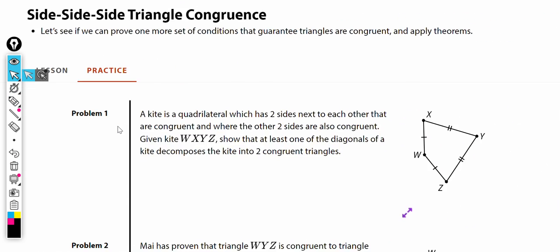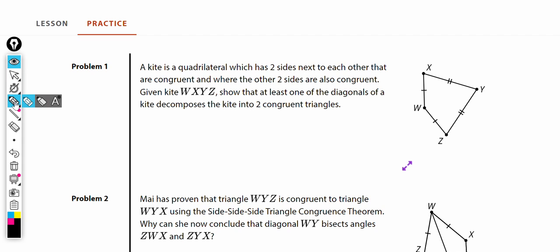Problem number one. A kite is a quadrilateral which has two sides next to each other that are congruent, and where the other two sides are also congruent. Given kite WXYZ, show that at least one of the diagonals of the kite decomposes the kite into two congruent triangles. These sides are side by side and they are congruent, and these two sides, side by side, are congruent, so we know that it is a kite.